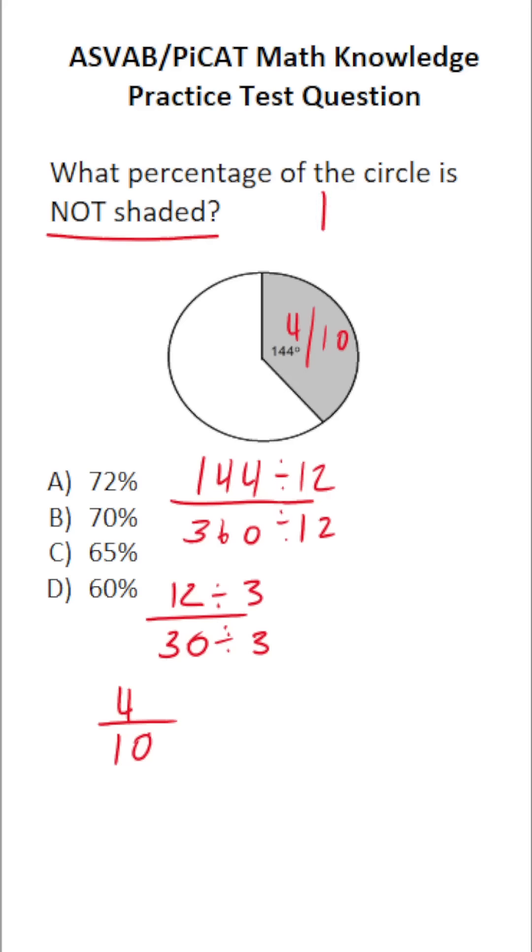This 1 represents the entire circle minus 4 tenths. To do this subtraction with fractions, I'm going to rewrite 1 to be 10 over 10. 10 divided by 10 is 1.